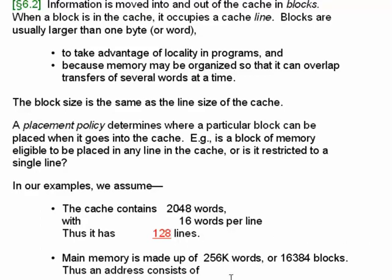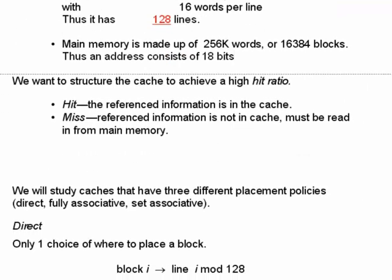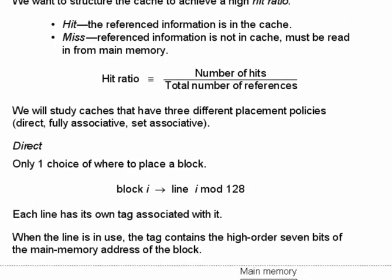The hit ratio is the measure of how effective a cache is in speeding up memory accesses. You'd like the vast majority of references to hit in the cache. A hit means the referenced information is in the cache, whereas a miss means it's not and needs to be read in from main memory. Hit ratio is defined as the number of hits divided by the total number of references. For example, 50 hits out of 60 references gives a hit ratio of 5/6, or about 83% — you should aim for at least 90%.